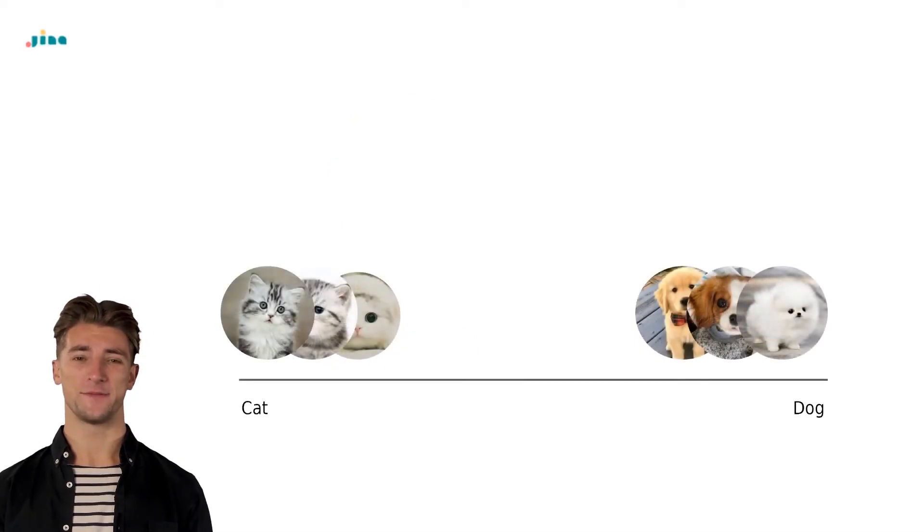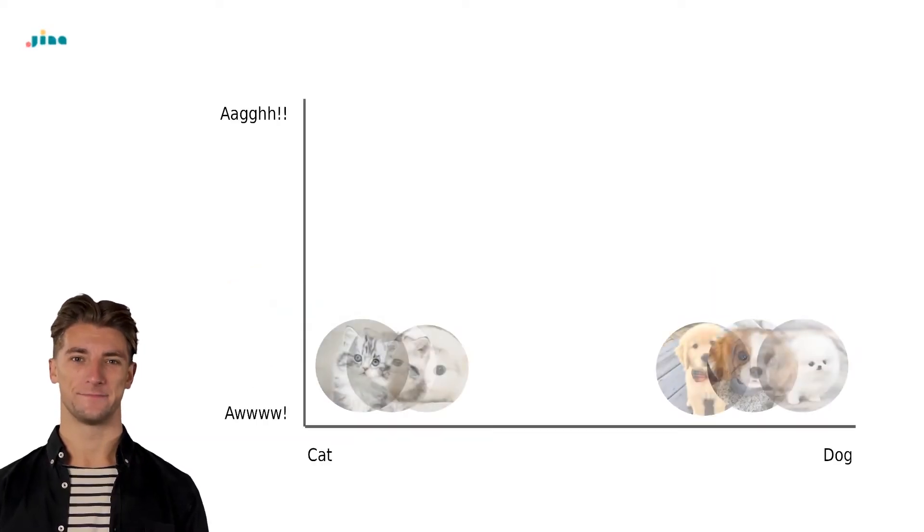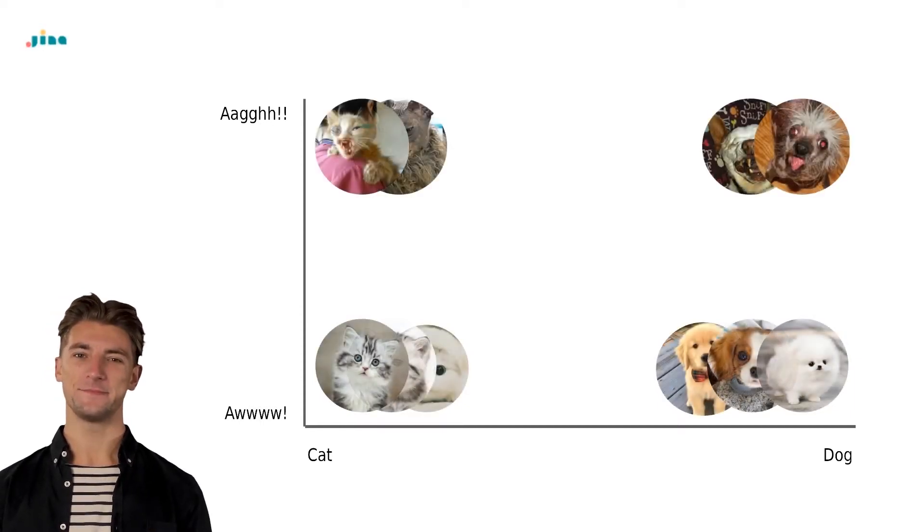Now, where would we put these little bundles of love on our graph? While they are cats and dogs, it feels like we should add another dimension to express their, let's just say, other characteristics. Let's add another axis to chart how cute or cursed these kitties or puppers are. Then we can place them in the appropriate section of our graph.